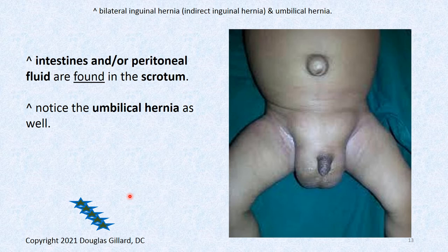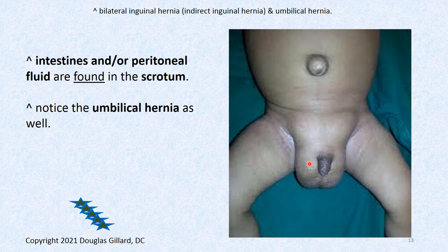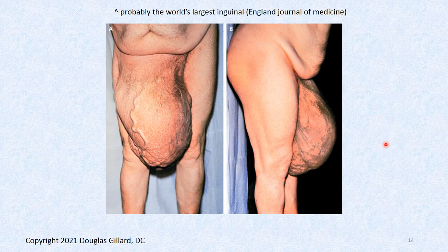Intestines and peritoneal fluid can get into the scrotum in men. Here's a newborn with a double hernia — what looks like a direct inguinal hernia above and intestine with fluid below, so both indirect and direct are going on in this child.